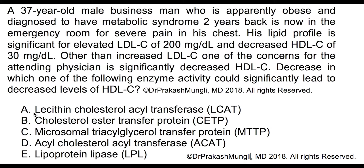Once LCAT is active — activated by apolipoprotein A1 — it continuously takes excess cholesterol from peripheral tissue, stores it as cholesterol ester, and this is how nascent discoidal HDL is converted into HDL3. When you find high levels of HDL3, that means there is increased activity of LCAT enzyme. In the very beginning of HDL metabolism, you really need LCAT enzyme activity because it is the enzyme that converts nascent discoidal HDL into the HDL3 molecule.